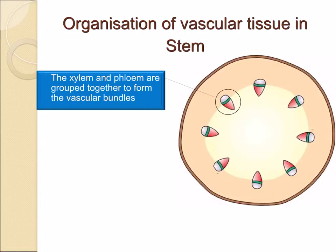Xylem and phloem occur together throughout the plant, as you can see in this diagram here. They are sometimes associated with other tissues, for example sclerenchyma fibres, to form discrete areas known as vascular bundles. We are going to look at how these vascular bundles are distributed throughout the plant.